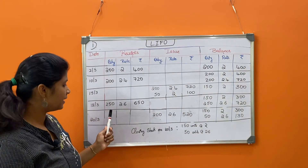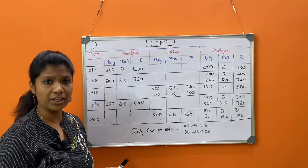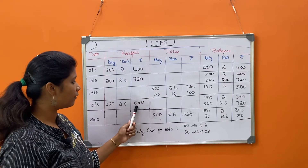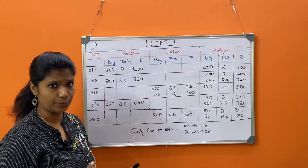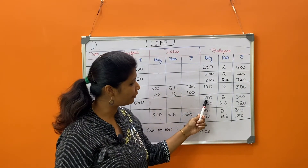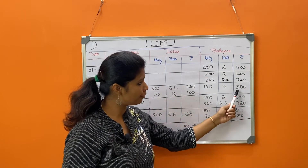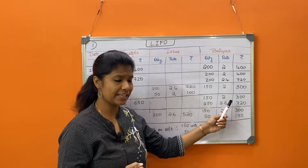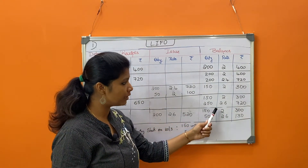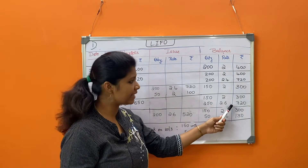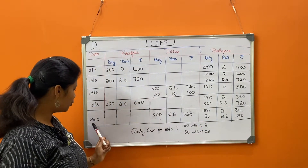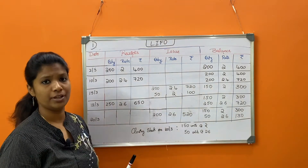Moving to 18th March: received 250 units at rate 2.6, value 650 rupees. Carry forward the previous day's balance — 150 units at rate 2, value 300 rupees — and today's balance: 250 units at rate 2.6, value 650 rupees.